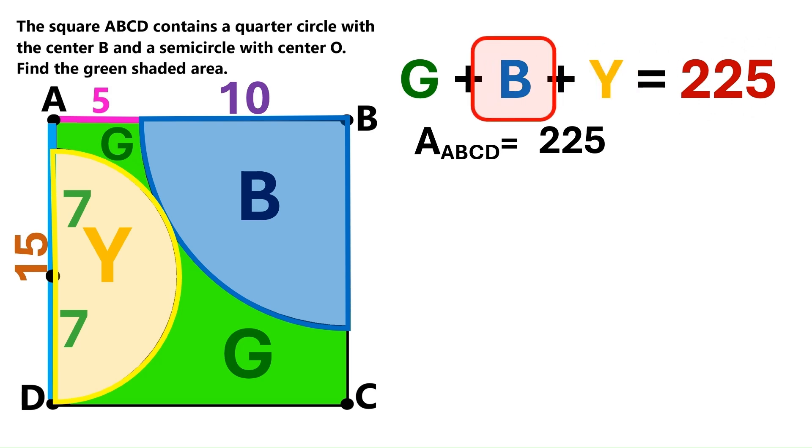And let's now find the area of region B. It's a quarter circle. And its radius is 10. To find the area, we take the square of 10. Then we multiply it by π. And then we divide it by 4, because it's the quarter of a circle. The result is 25π. So let's replace this B over here with that value.